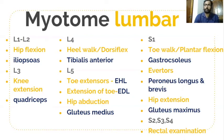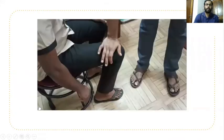S2, S3, and S4 are checked by digital rectal examination. A lubricated index finger is inserted into the anal canal and the patient is asked to squeeze. If the S2, S3, S4 nerve roots are affected, there will be incontinence and the patient will not be able to squeeze the finger with the anal sphincters.